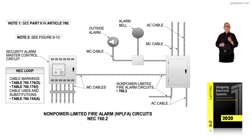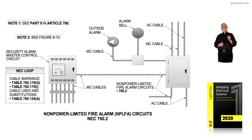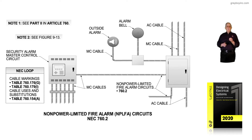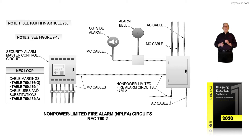Notice the cables used to run to these individual devices to sound the alarm for fire, smoke, different things that might occur — water, maybe a sprinkler system goes off. Notice in the NEC loop to the left of the illustration, cable markings — we can find those cable markings in table 760.176G, cable marking 760.179L, and cable uses and substitution type cables in 760.154A, which we could use instead of the above cables.